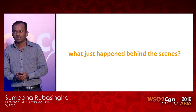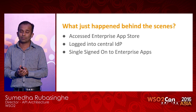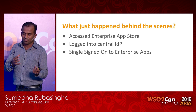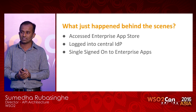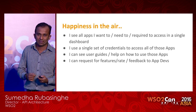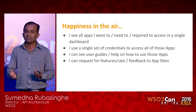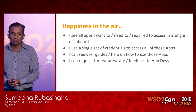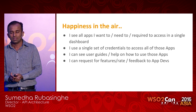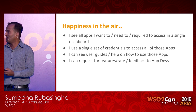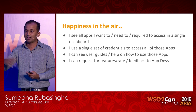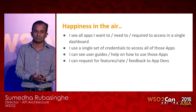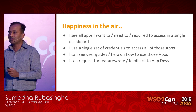So what just happened behind the scenes? First, I accessed the enterprise app store and saw all the applications I'm allowed to see. Before that, I got logged into the central IDP and got single signed on into all the enterprise applications I'm allowed to access. I'm happy because of several things: I see all the applications I'm supposed to see in a single place. Just imagine Siri being a new user — rather than having to talk to 10 different people to figure out what applications to access, everything is listed in one place. You access a single URL and get all the applications.